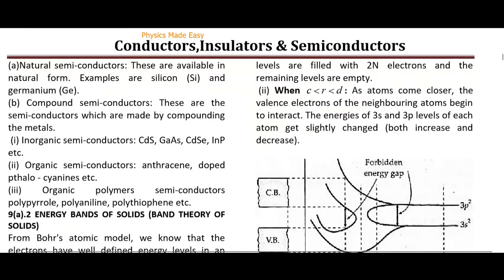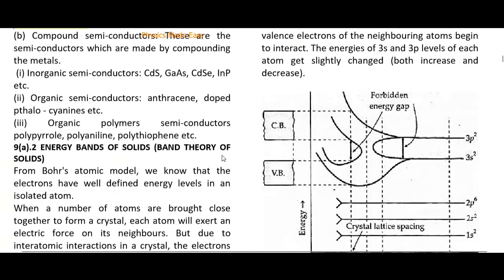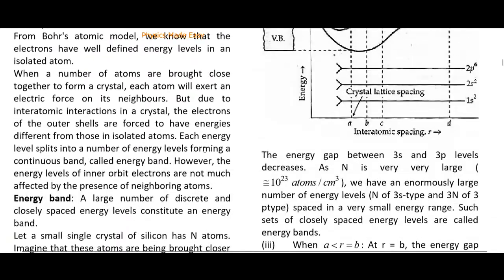Naturally occurring semiconductors are silicon and germanium. Compound semiconductors are made from compound metals. Organic semiconductors include anthracene and doped phthalocyanines. Organic polymer semiconductors include polypyrrole, polyaniline, and polythiophene.